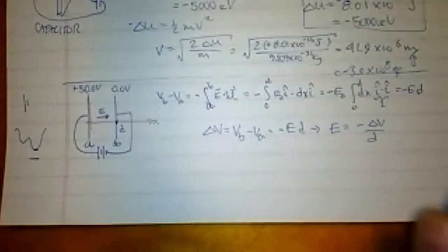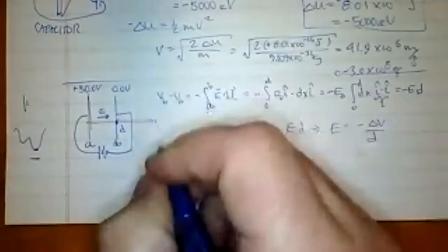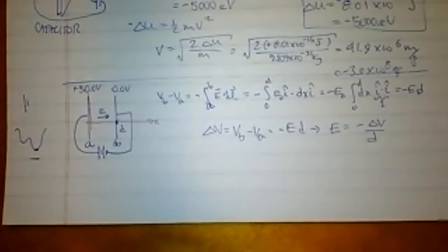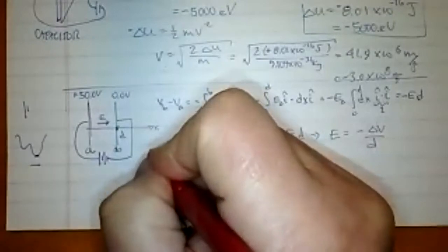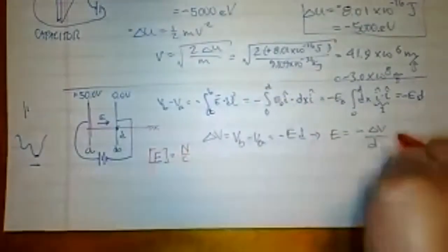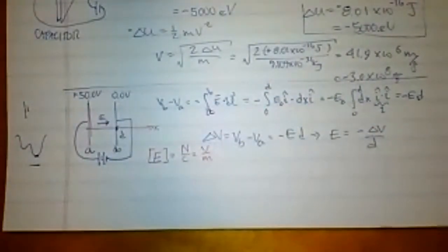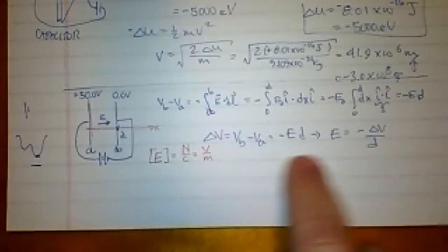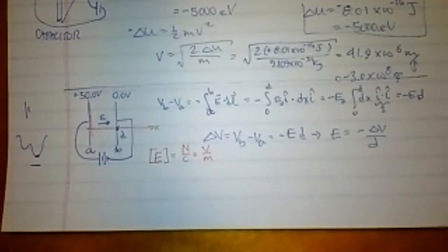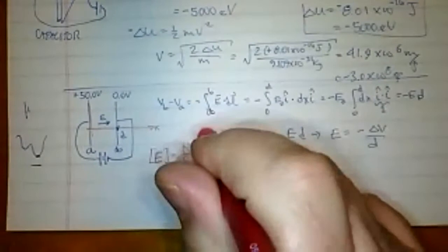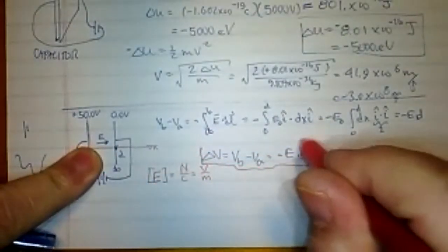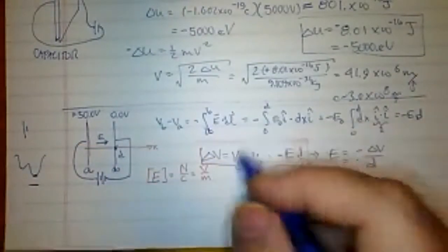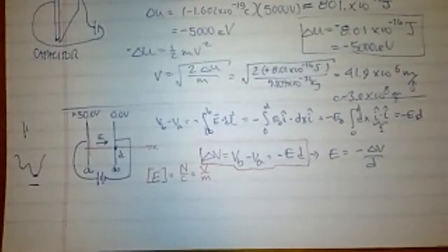This tells us ΔV = −ED, so E = −ΔV/D. We now have a new unit for electric field: not just newtons per coulomb, but also volts per meter. That comes in handy today in lab for electric field mapping. This is only true for a capacitor — in general you still use Gauss's law or Coulomb's law to calculate an electric field.